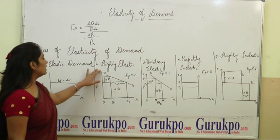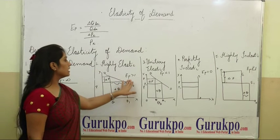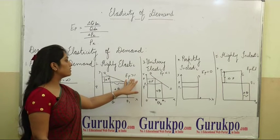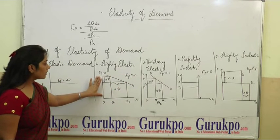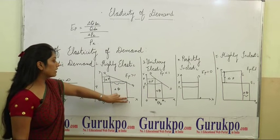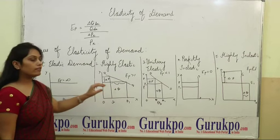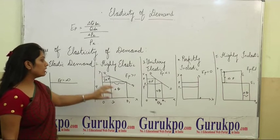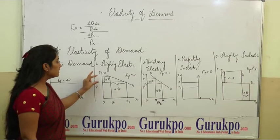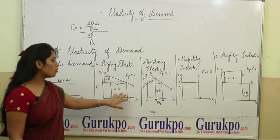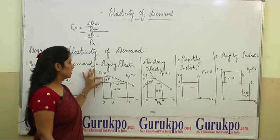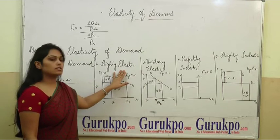The second degree is highly elastic demand, where Ep is greater than 1. In this diagram, the difference between quantity demanded is more. That means with the change in price, quantity demanded changes more as compared to the change in price. The percentage change in quantity demanded is greater than the percentage change in price. This is highly elastic demand.